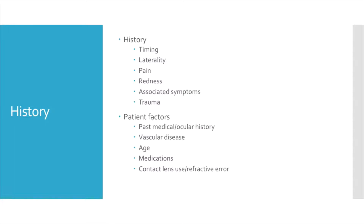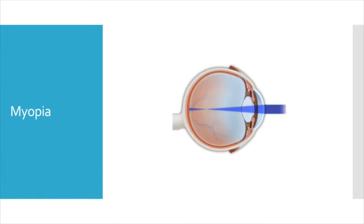The patient's age can also narrow the differential. Certain causes, such as giant cell arteritis, can be ruled out if the patient is a child, for example. It's also important to ask about medications; both systemic and ocular medications can be associated with side effects, though most would cause vision loss on a subacute scale. Additional history factors include refractive status and contact lens status. Very myopic eyes are predisposed to retinal detachments, and contact lens wearers are at increased risk for severe anterior chamber or ocular surface infections.